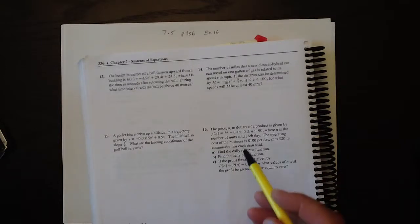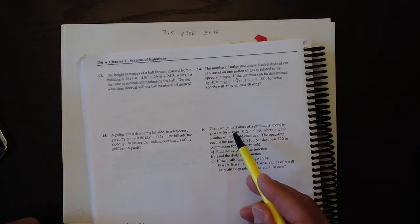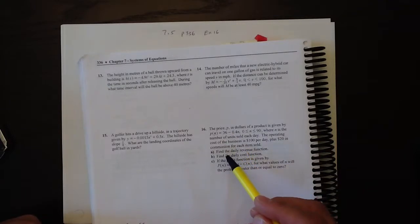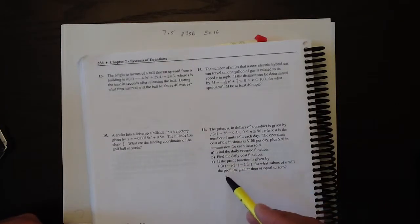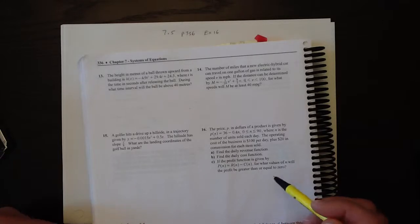Exercise 16 asks for three different things. It asks for a revenue function, a cost function, and if the profit function is this stuff, for what values of n will the profit be greater than or equal to zero?